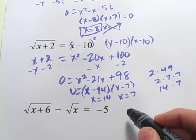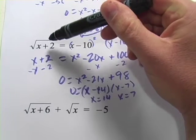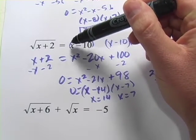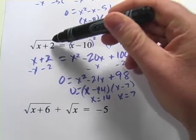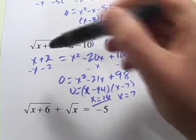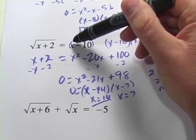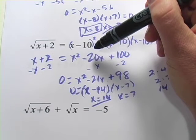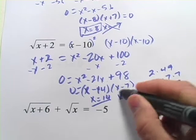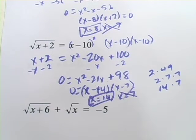But we want to test both of these now. If I put 14 in here, 14 plus 2 is 16. The square root of that is 4. And if I put 14 in here, 14 minus 10 is 4. We get 4 equals 4. So that one works. How about the 7? 7 plus 2, square root of that, that's 9. Square root of that is 3. But that does not equal 7 minus 10, which is a negative 3. So that one doesn't work. This one does.